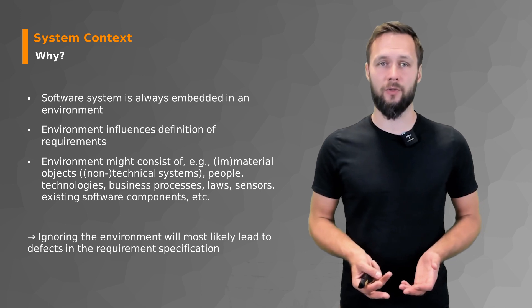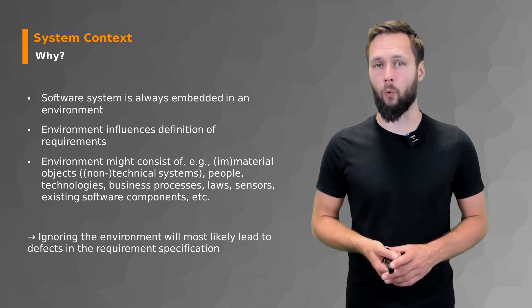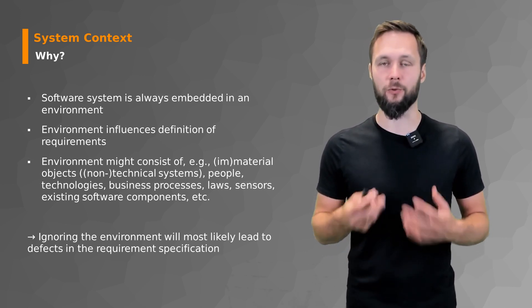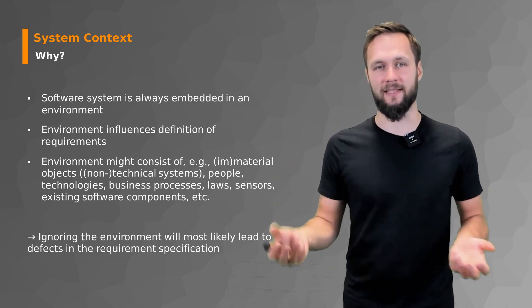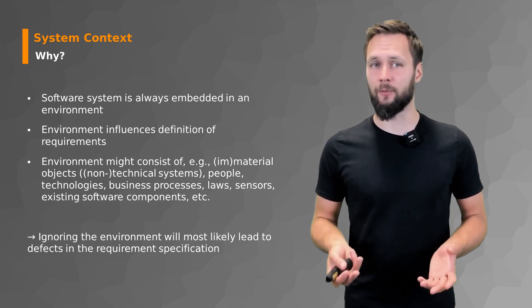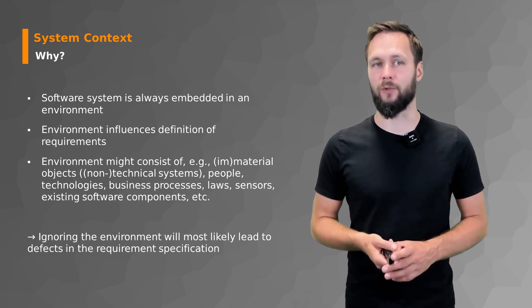Why do we need a system context? Because a software system is always embedded in an environment. There is no software system that is not somehow embedded in something. Software does not exist in an empty space. And this environment influences the definition of requirements.